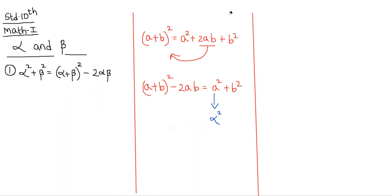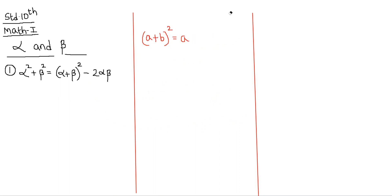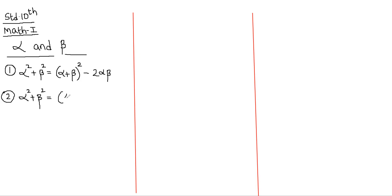No need to memorize it by heart. Just understand how the formula has been derived. The second formula of alpha and beta is: alpha squared plus beta squared is equal to (alpha minus beta) whole squared plus 2 alpha beta.